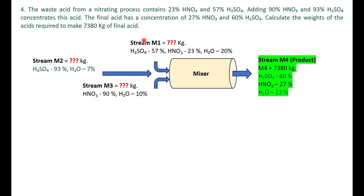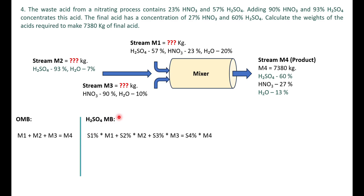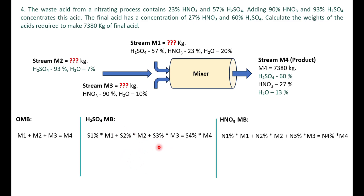Now we perform the overall mass balance: m1 + m2 + m3 = m4. Only m4 = 7380 kg is known; m1, m2, m3 are unknowns. For the sulfuric acid mass balance, we multiply each stream's mass by its respective sulfuric acid fraction. Similarly for the nitric acid mass balance, we multiply each stream mass by its respective nitric acid fraction.